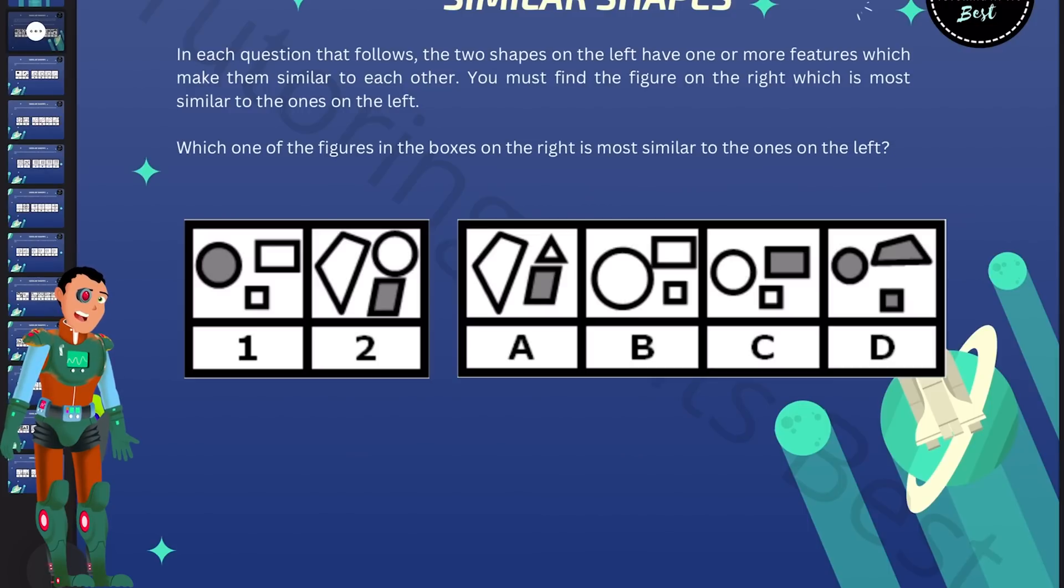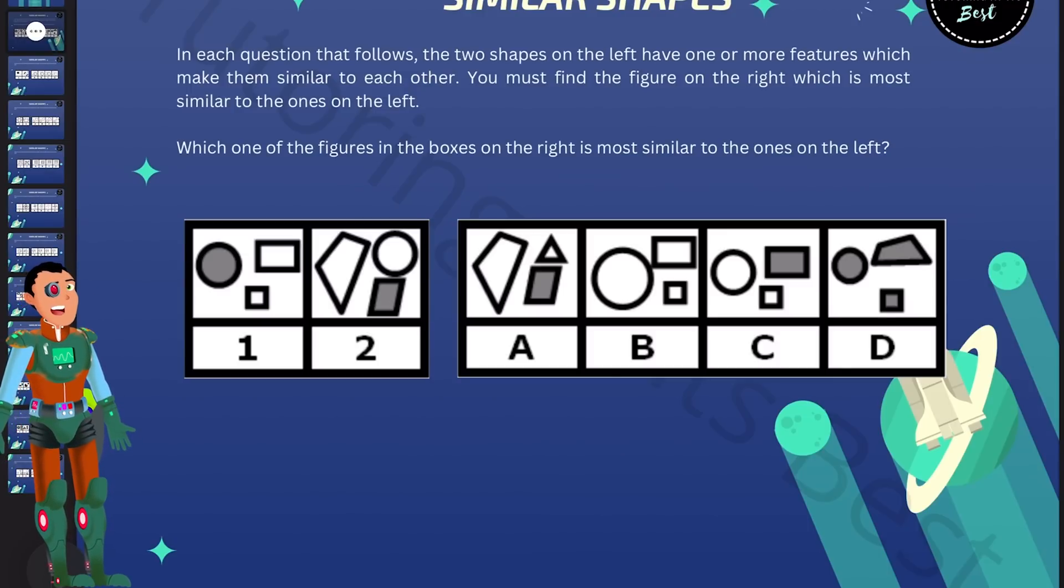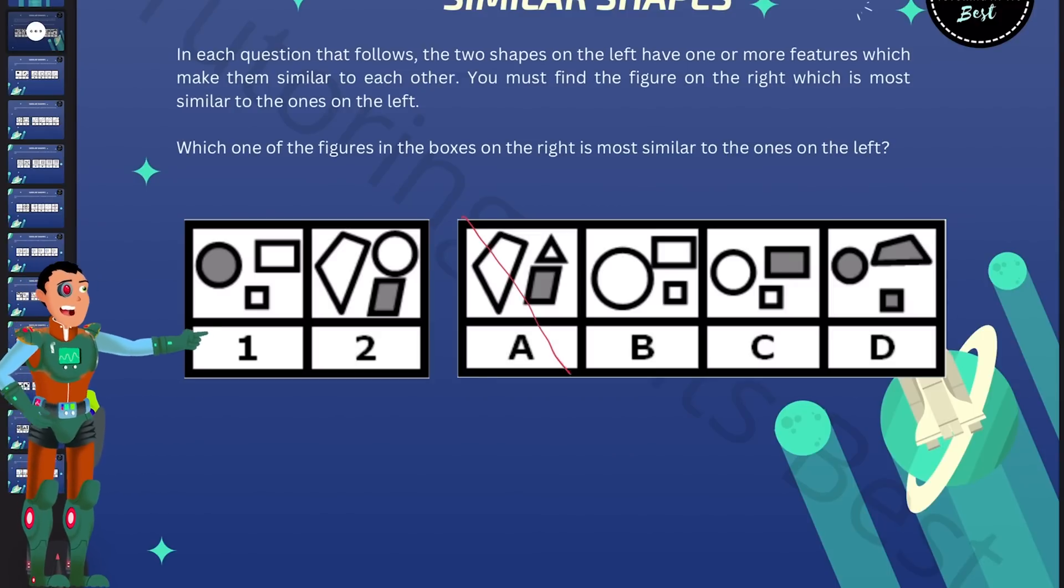So what do we notice right away? Perhaps boxes one and two have four-sided shapes and one circle. Well if so, then this would lead us to B, C or even D. So we can eliminate A right away.